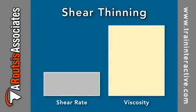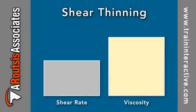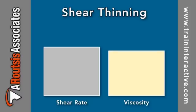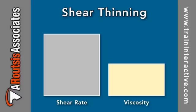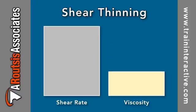As the shear rate, or flow rate, of the polymer increases, the viscosity decreases. This rheological behavior is unique to polymers and is called shear thinning.